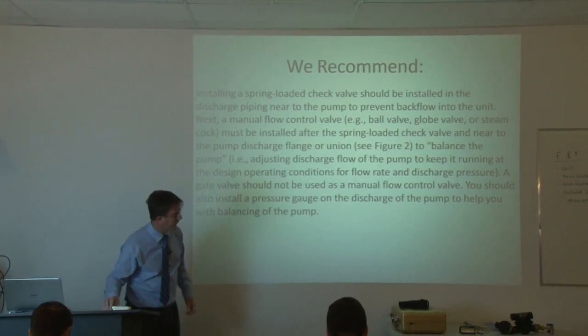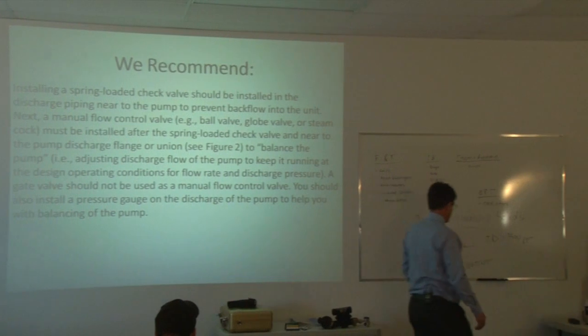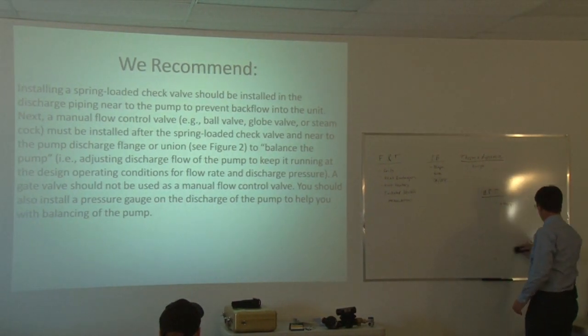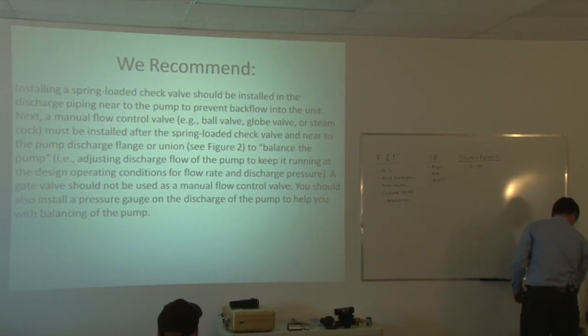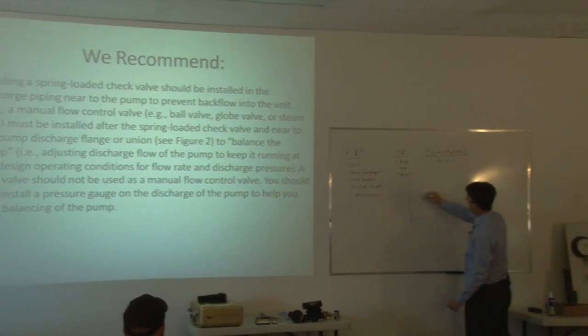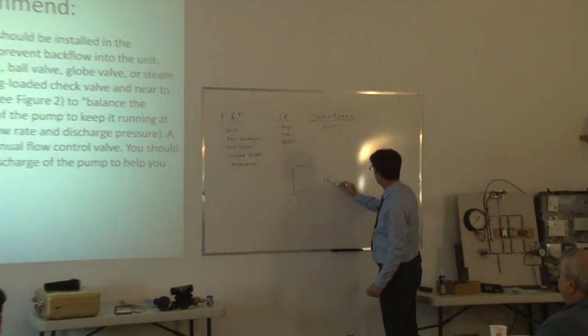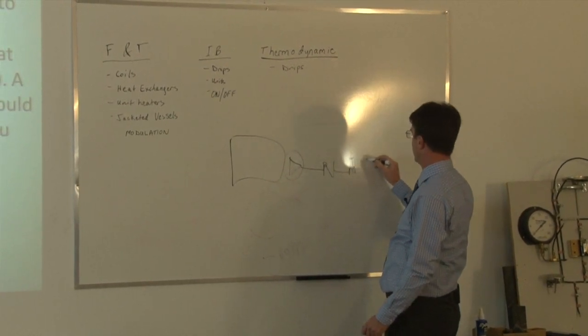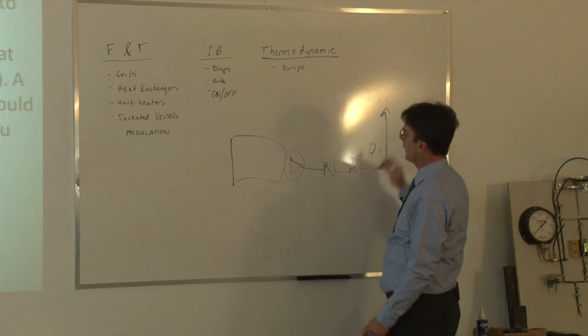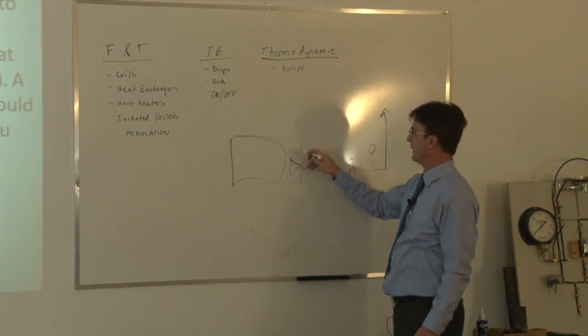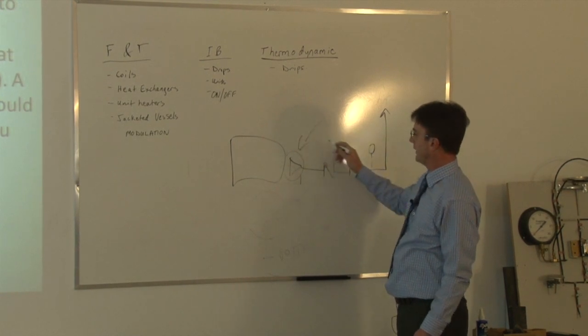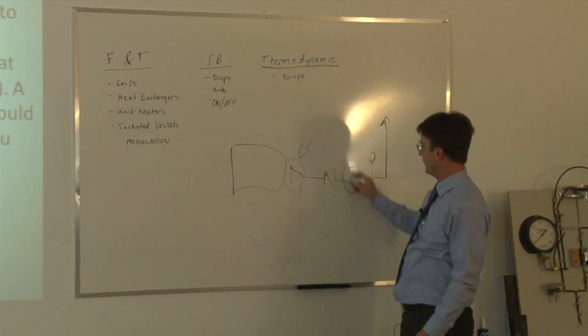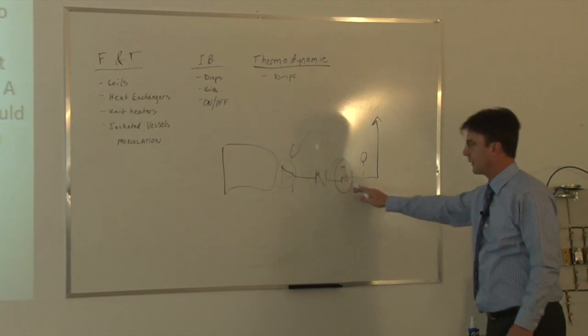We recommend at the outlet of a pump we always want to see a check valve and a throttling valve and a pressure gauge. So if we have a receiver and our pump and we want to see a check valve and then a throttling valve and a pressure gauge. And this allows us to keep the pump on the curve. So sometimes the pump can be oversized and we don't have enough head to satisfy the pump. So the pump requires a certain amount of static head on the outlet.